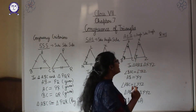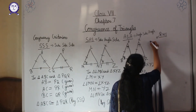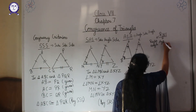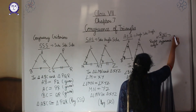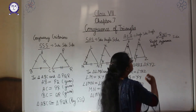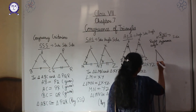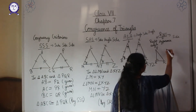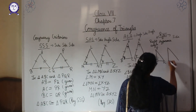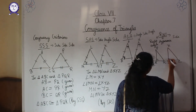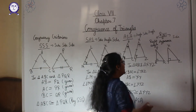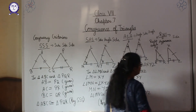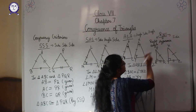The last criteria is RHS — right angle, hypotenuse, side. This applies when a triangle has a right angle. Consider triangles PQR and XYZ, where angle Q and angle Y are each 90 degrees. It is given that PR equals XZ and QR equals YZ.